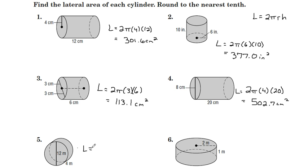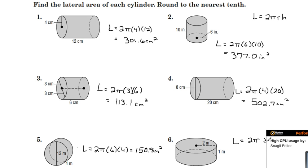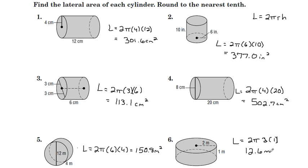For number 5, lateral surface area: 2 pi, diameter of 12 means radius 6. And it's not shown very well, but that is a height of 4, and the calculator yields 150.8 square meters. Number 6: L equals 2 pi, the radius is 2, and the height is 1, and we come out to 12.6 square meters. And there we are. We'll be right back.